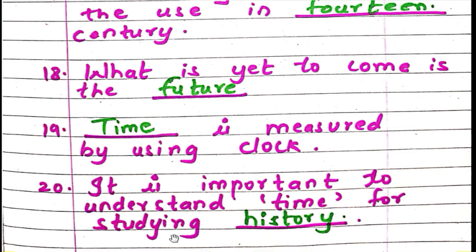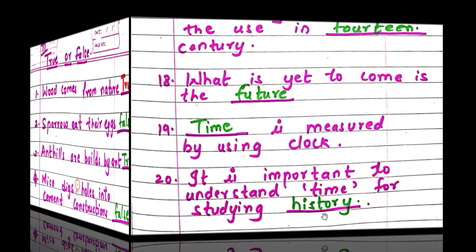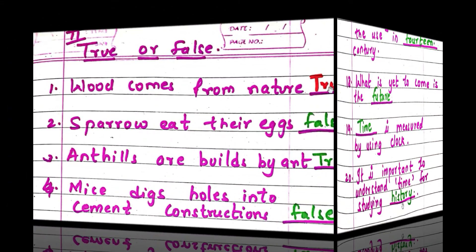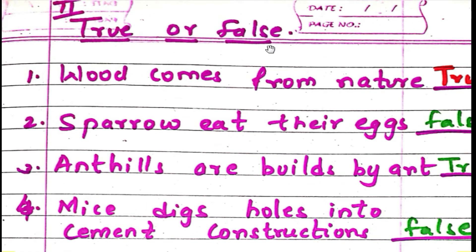Number fifteen: the map must be aligned with the direction on the ground. Number sixteen: the land is spread very far and wide. Number seventeen: the hourglass came into use in the 14th century — remember children, 14th century. Number eighteen: what is yet to come is the future — F-U-T-U-R-E. Number nineteen: time is measured by using a clock. Number twenty: it is important to understand time for studying history.